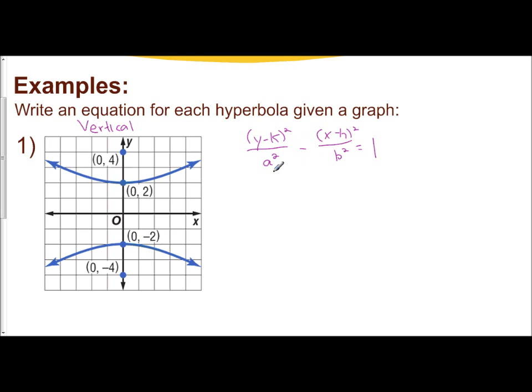y minus k squared over a squared minus the quantity x minus h squared over b squared equals 1. I need h and k, I need a, and I need b. Well, h and k is based off of your center. Well, that means h is 0 and k is 0. The center is halfway between our vertices.